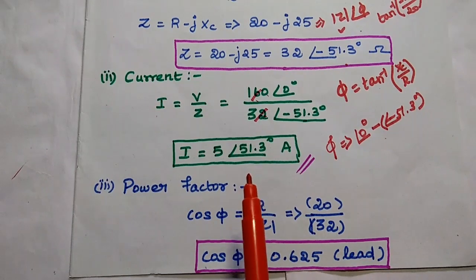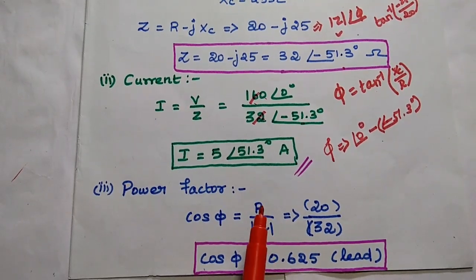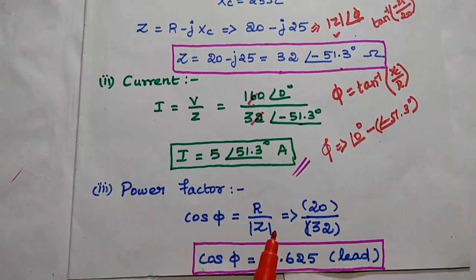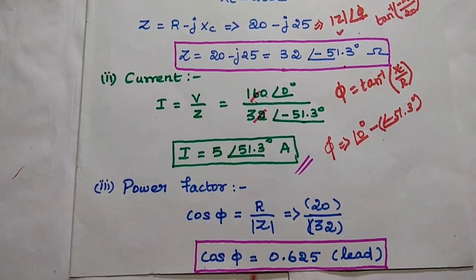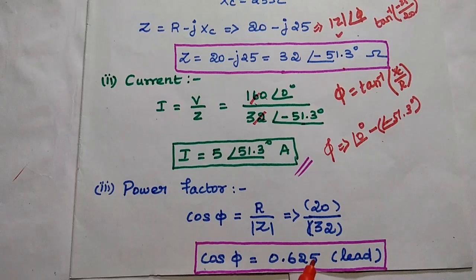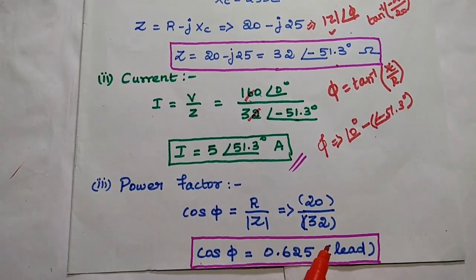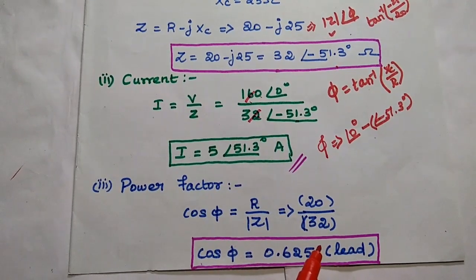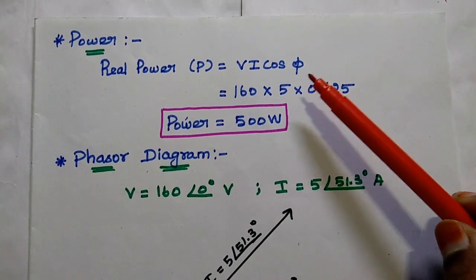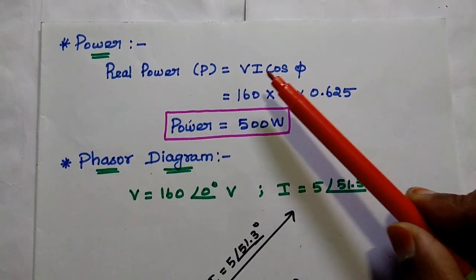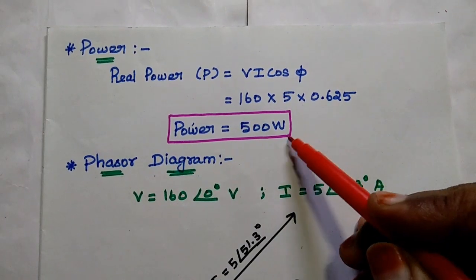After finding the current, we find the power factor. Its formula is: cos φ equals resistance divided by the magnitude of impedance — that is 20 divided by 32 — giving cos φ equal to 0.625. It is in the leading condition, because in this RC circuit the current leads the voltage by 51.3 degrees. Next, the real power P equals V·I·cos φ equals 160 times 5 times 0.625, giving 500 watts.